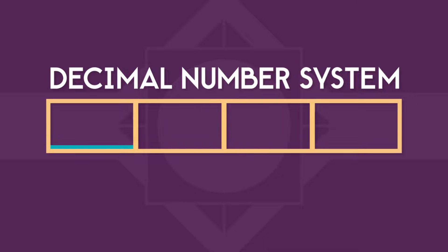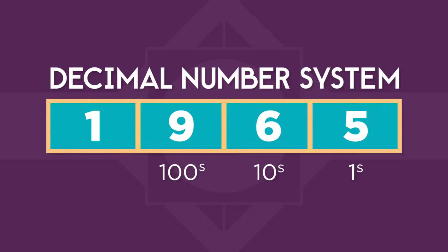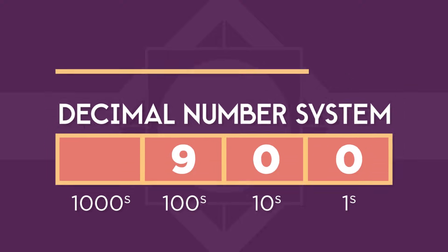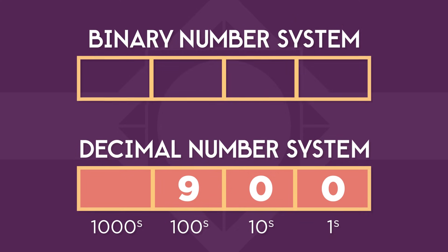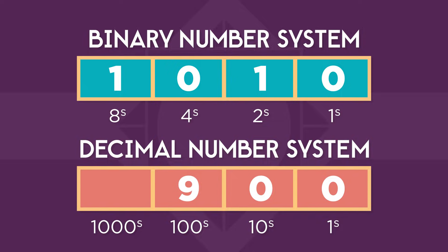In the decimal number system we're all used to, each position in a number has a different value. There's the one position, the ten position, the one hundred position, and so on. For example, a nine in the one hundred position is nine hundred. In binary, each position also carries a value, but instead of multiplying by ten each time, we multiply by two. So there's the one's position, the two's position, the four's position, the eight's position, and so on.